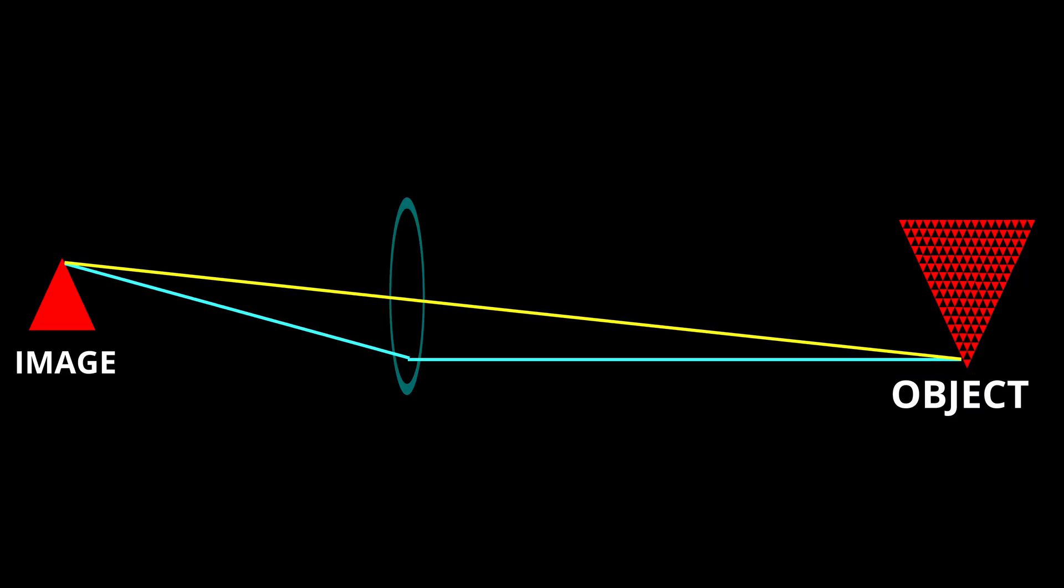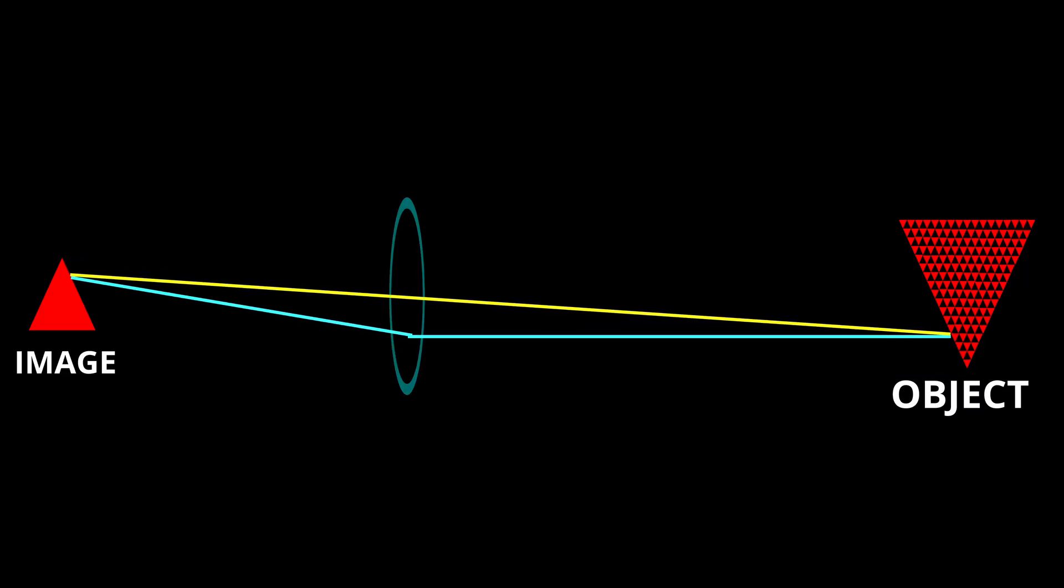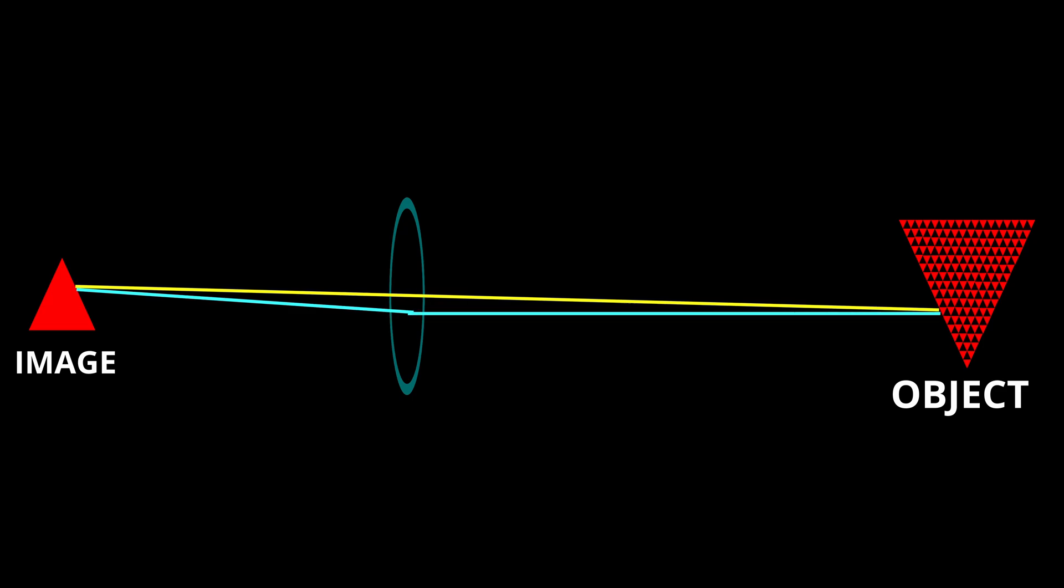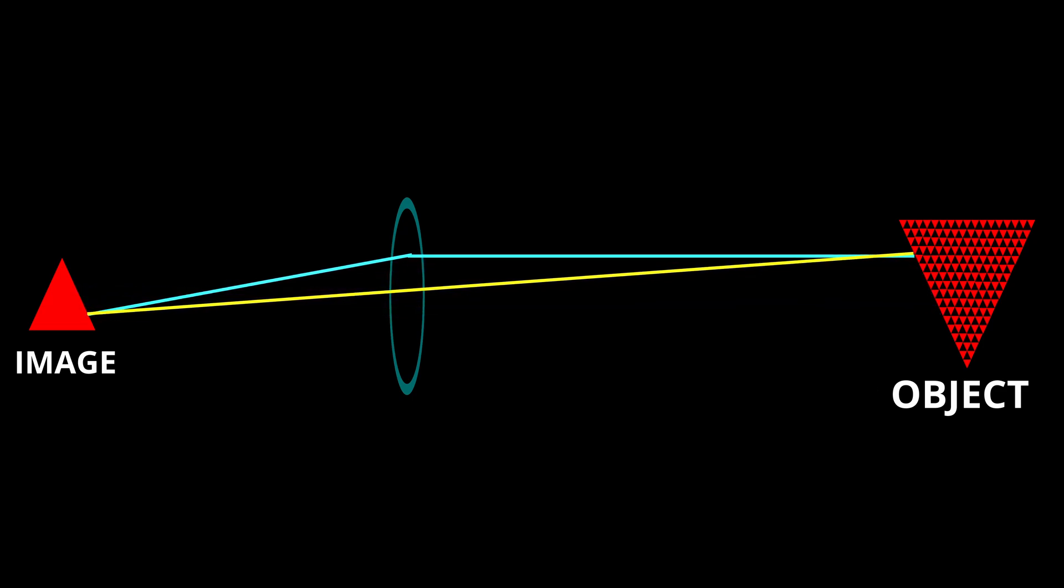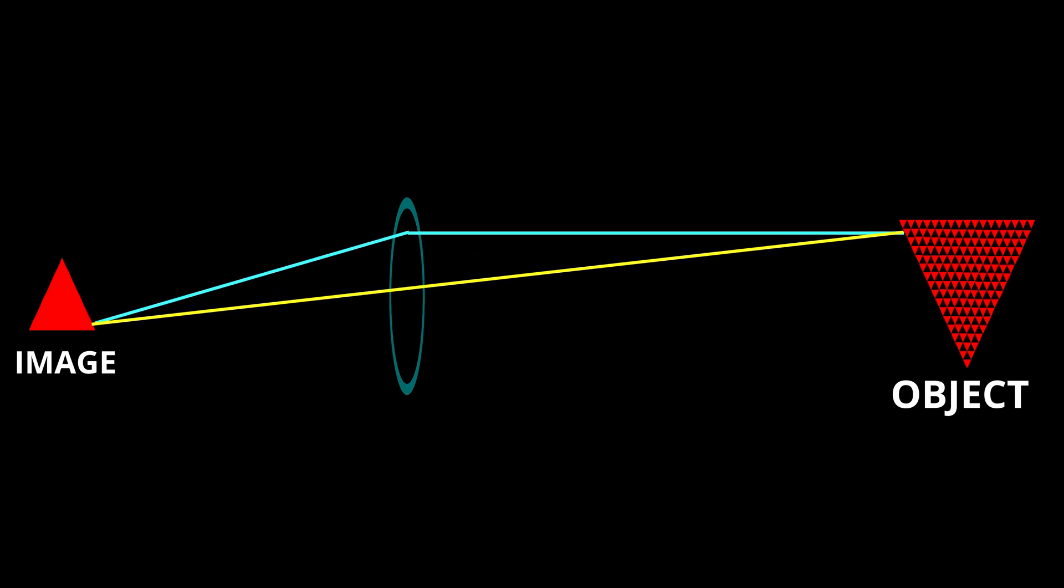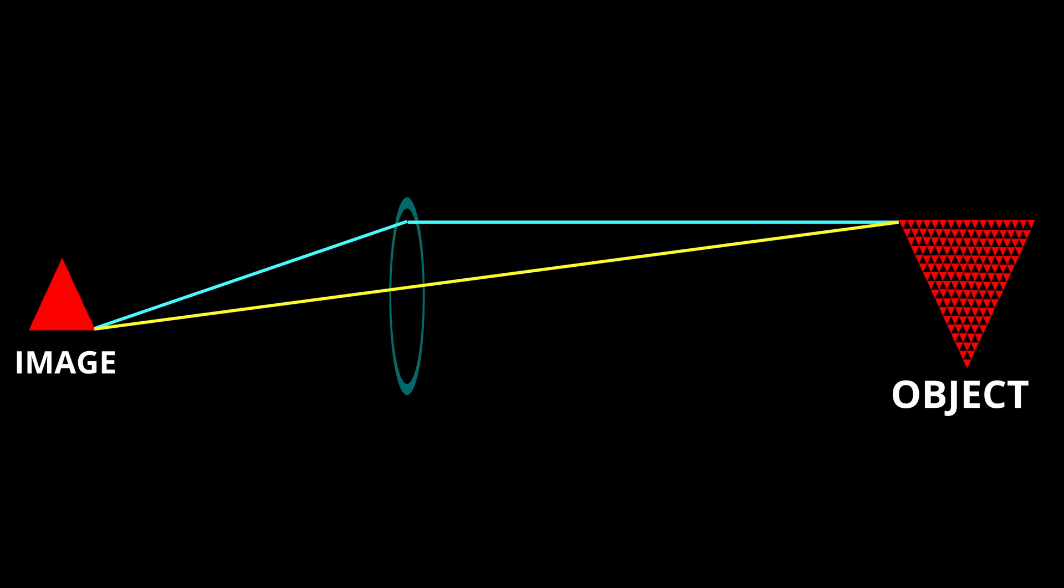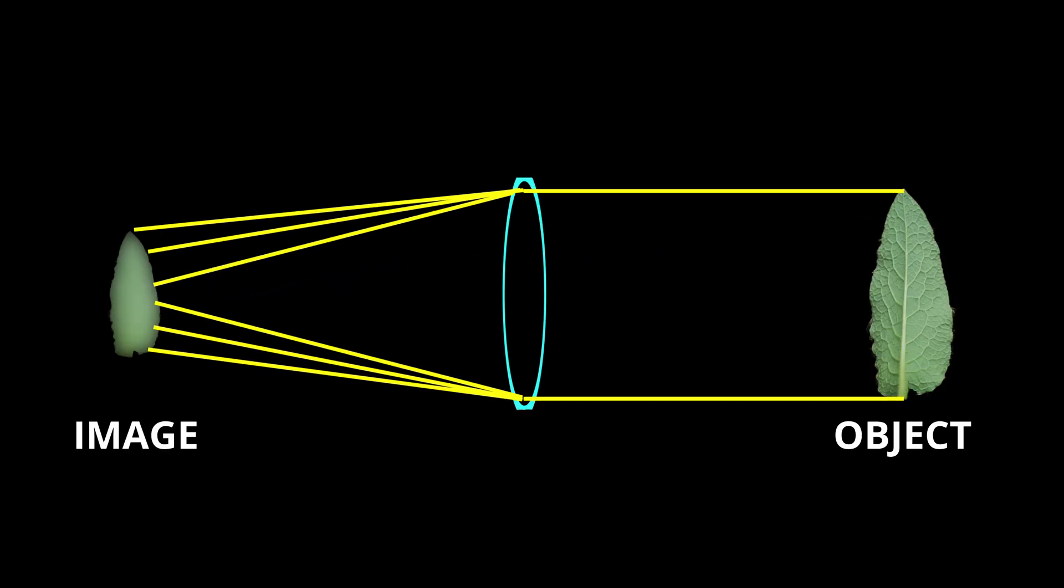Try thinking of it this way. Any object consists of essentially an infinite number of points, and when a lens brings that object into focus, it is bending the light coming from all those points so that they land at corresponding points on the focus plane.